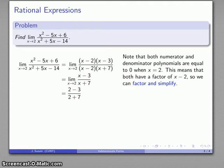And as x gets close to 2, this thing gets close to 2 minus 3 over 2 plus 7. And after all the dust settles, that's minus 1 over 9.